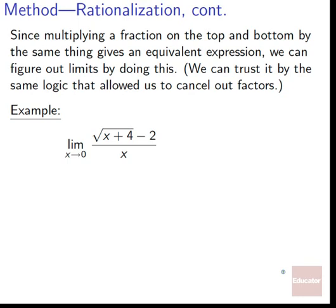Since multiplying a fraction on top and bottom by the same thing gives an equivalent expression — just like multiplying by 5/5 gives the same value — we can figure out limits by doing this. We can trust that multiplying by the conjugate over itself doesn't introduce any real issues, by the same logic as canceling factors: it might change the function at one single point, but we don't care about single points in a limit.